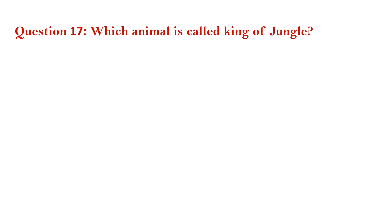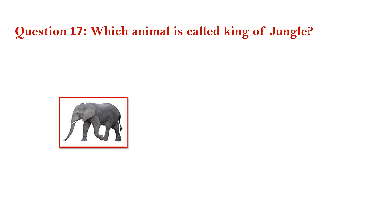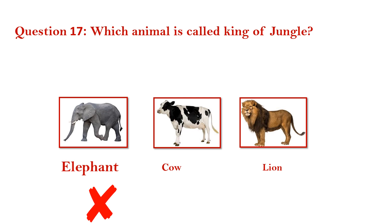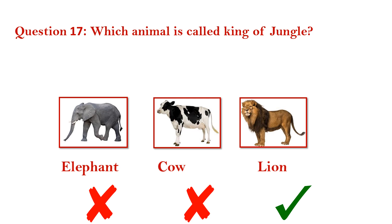Question number 17. Which animal is called king of the jungle? Elephant — wrong. Cow — wrong. Lion — right. Answer is lion.